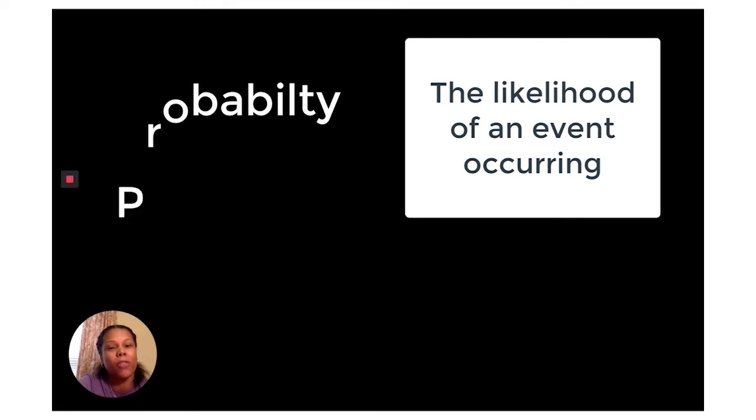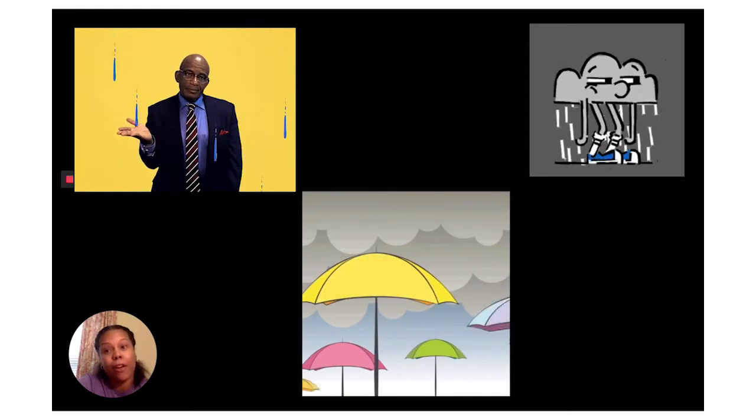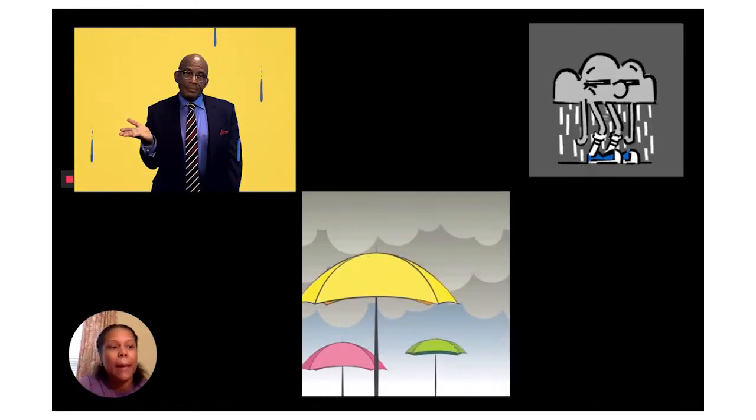This is like making decisions about the weather. If it is gray and cloudy, it is likely that rain is on the way. Let me show you other examples of when we use probability.